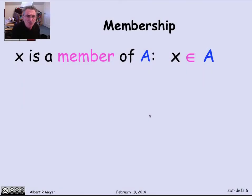So the most fundamental feature of a set is what's in it. And for that, there's a special notation. So we'll say that x is a member of A, where A is a set, and use this epsilon symbol to indicate membership. It's read x is a member of A.